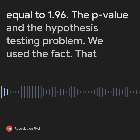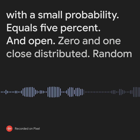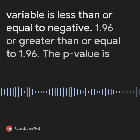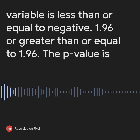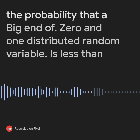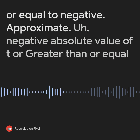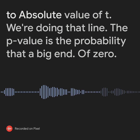Regarding the p-value in hypothesis testing: we use the fact that with a small probability of 5%, an N(0,1) distributed random variable is less than or equal to negative 1.96 or greater than or equal to 1.96. The p-value is the probability that an N(0,1) distributed random variable is less than or equal to negative |t|, or greater than or equal to |t|.